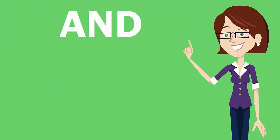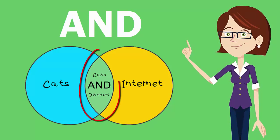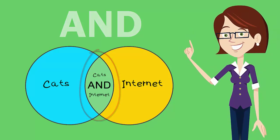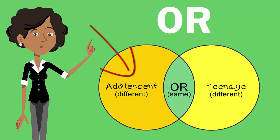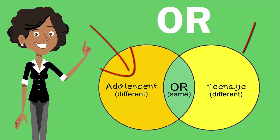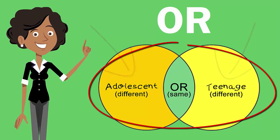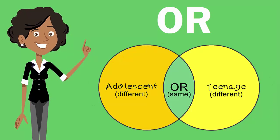These are: AND — when used between your keywords, those words must be included somewhere in the search results. OR — this will look for one keyword, or the other, or both.